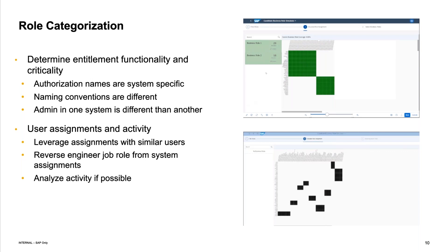Another area we've invested a lot in is role management. The basic challenge in SAP and other applications is that there really isn't a way of understanding what a role does just by its name, because each system has different capabilities and exposes different risks. The role name within SAP can vary, and there may not necessarily be naming conventions that are consistent. An accounts payable role in SAP has T codes underneath that may provide capabilities that aren't inherent in the name itself.